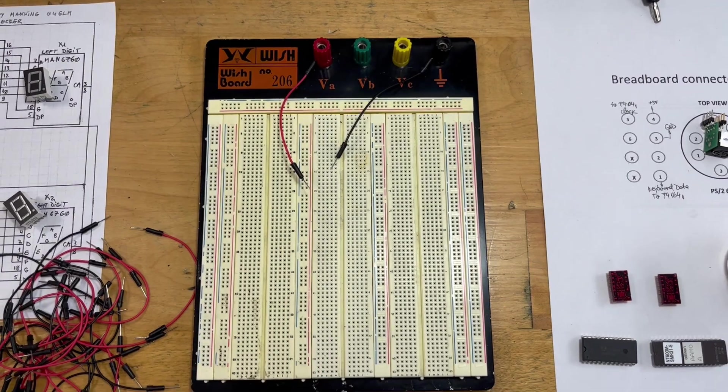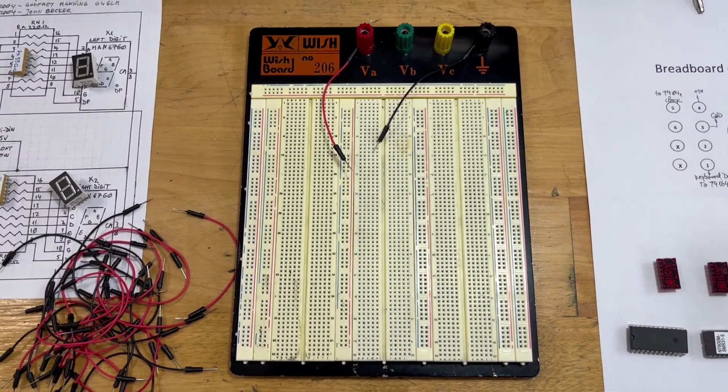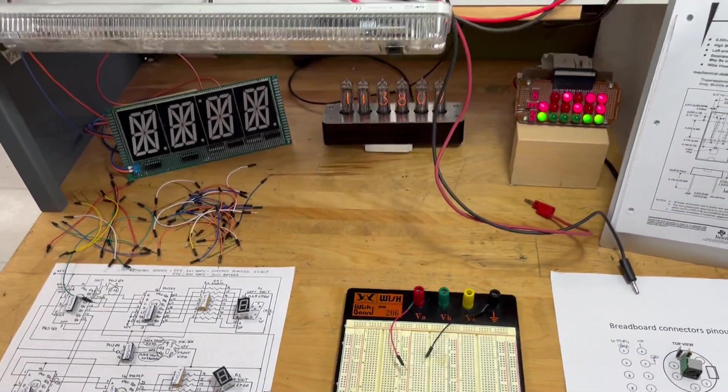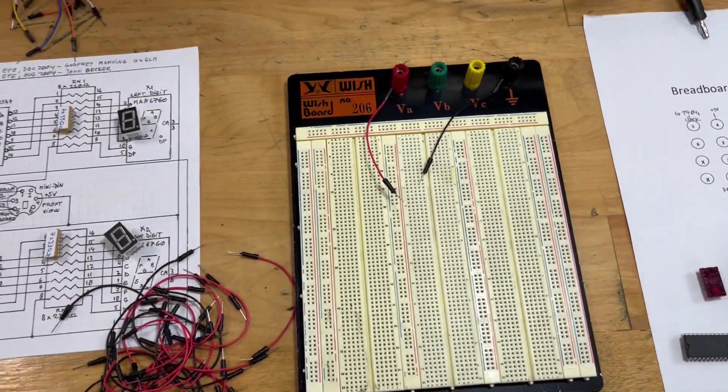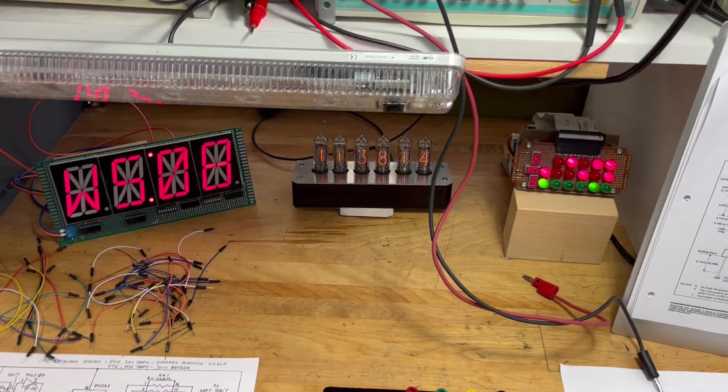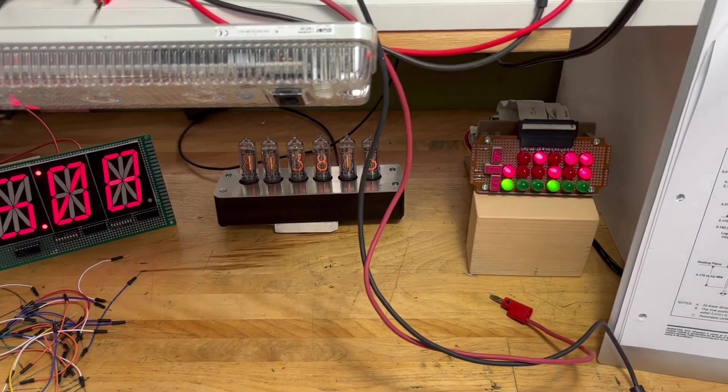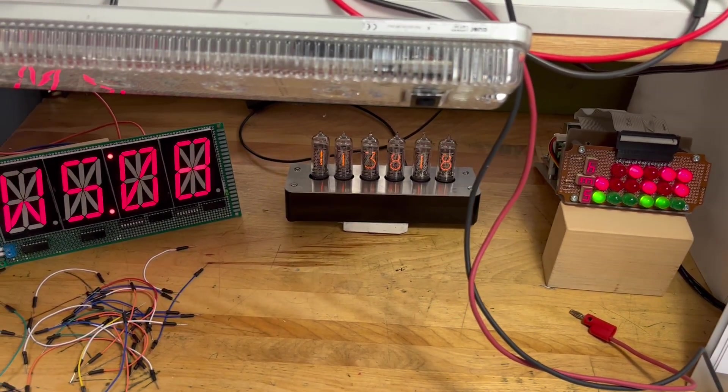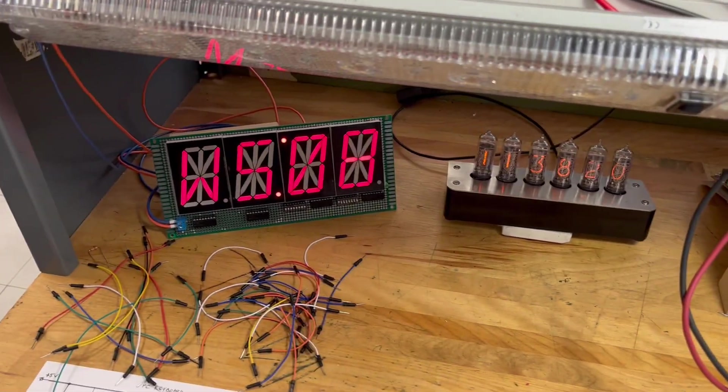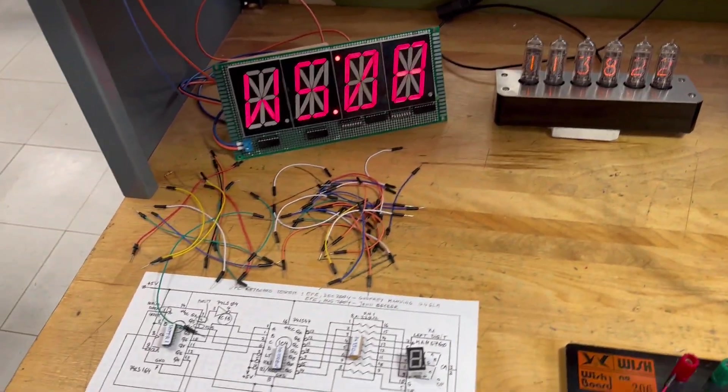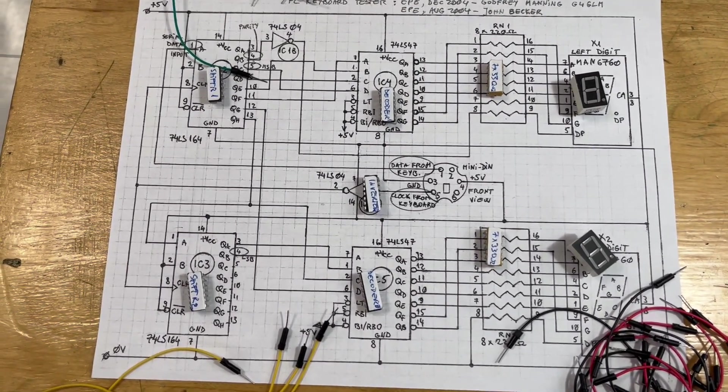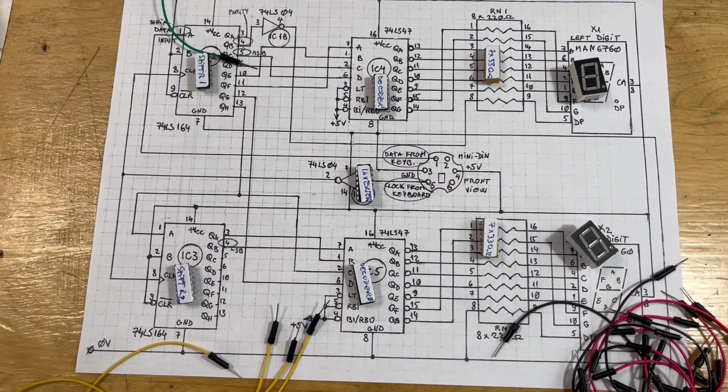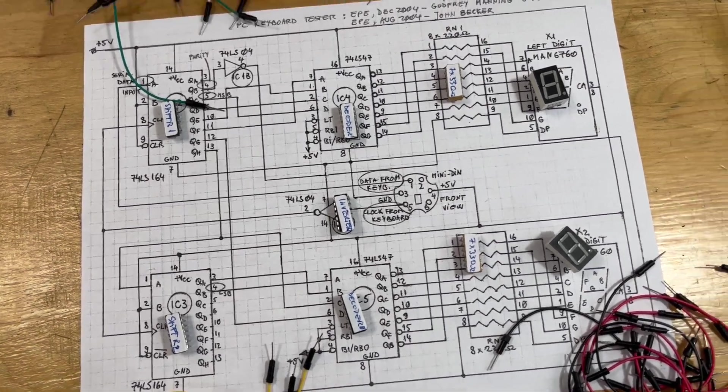They're going to be more than enough for our project. Here is my binary clock, here is the nixie tube one, here is my workstation, and this is the diagram we're going to follow. To easily identify the integrated circuits, I put some labels on them.